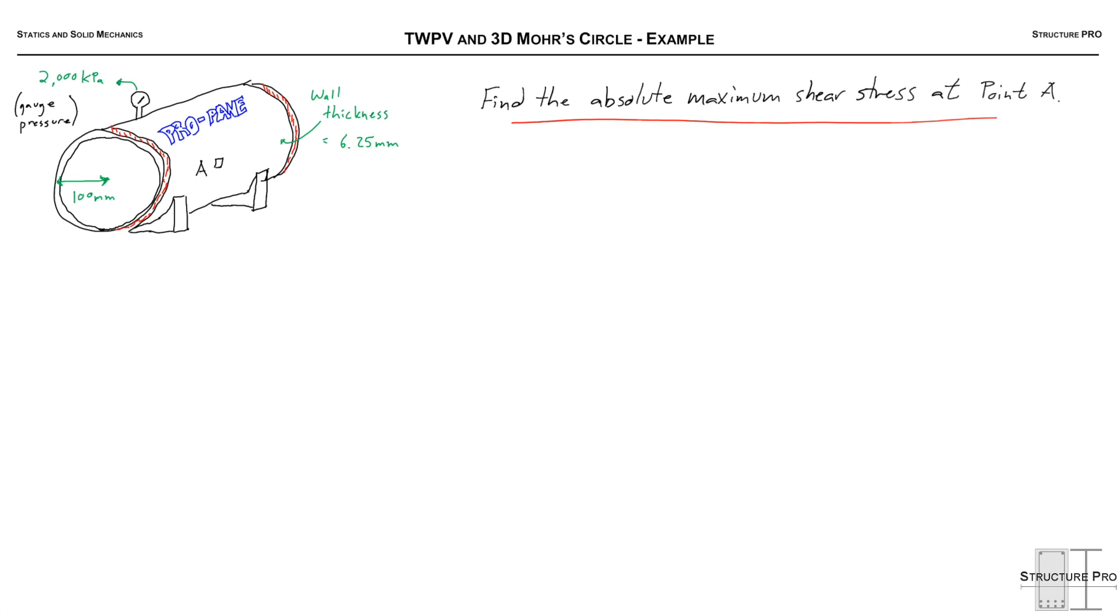What are we given here? We got a propane tank with a wall thickness of 6.25 millimeters, a radius of 100 millimeters, and a gauge pressure of 2,000 kilopascals. Gauge pressure is the pressure in addition to the atmospheric pressure that's already on both sides of the propane tank wall.